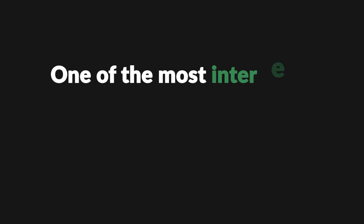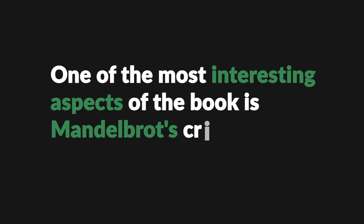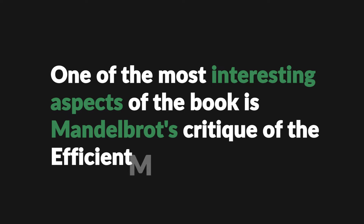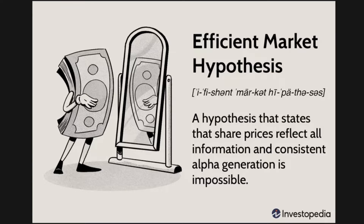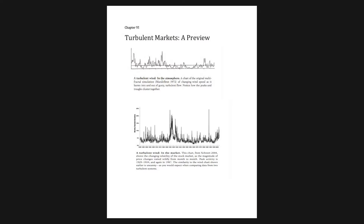One of the most interesting aspects of the book is Mandelbrot's critique of the efficient market hypothesis, which holds that prices in financial markets always reflect all available information. Mandelbrot argues that this assumption is fundamentally flawed and that in reality, markets are subject to bursts of irrational behavior and widespread herding.